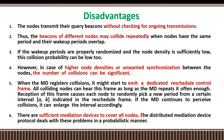The protocol also has some disadvantages. Nodes transmit their beacons without checking for ongoing transmissions, so when a packet transfer is happening between two nodes, other nodes may still attempt to transmit to that node. The beacons of different nodes may collide when nodes have the same period and their wake-up periods overlap. If wake-up periods are properly randomized and node density is sufficiently low, this collision problem can be minimized.